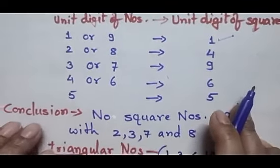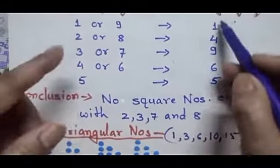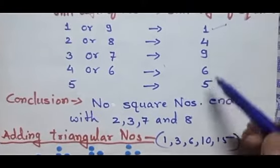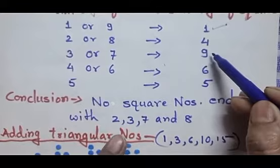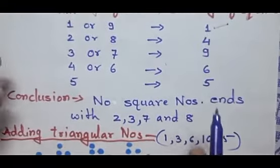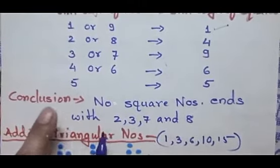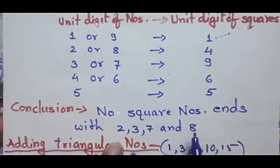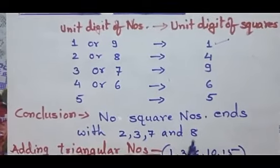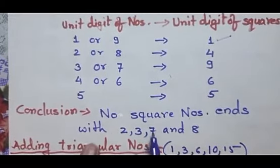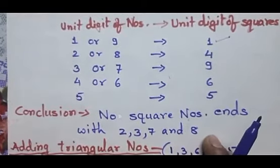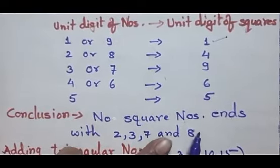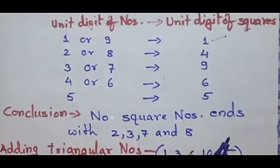So let us conclude: looking at square numbers, their unit digits are either 1, 4, 5, 6, or 9. From here we can come to the conclusion that there are no square numbers ending with 2, 3, 7, or 8. It means if you see any number whose unit digit is 2, 3, 7, or 8, you can clearly say that they are not at all square numbers.